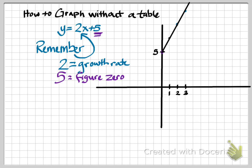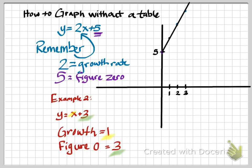Let's look at another example. Example number 2: y equals x plus 3. In this example, we also want to find the growth rate, and the growth in this case is 1, because there's 1x in my rule. The second thing we need to find is figure 0. We need to remember that 3 is the number of tiles in figure 0.